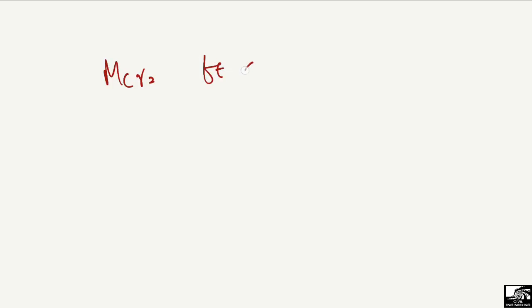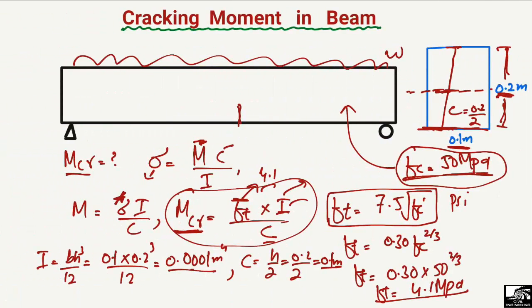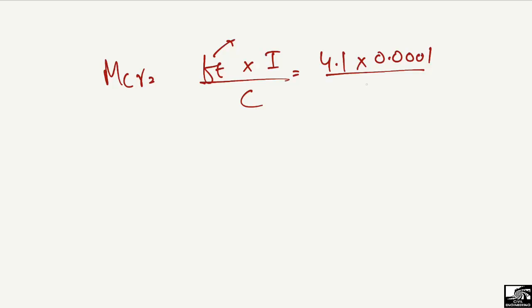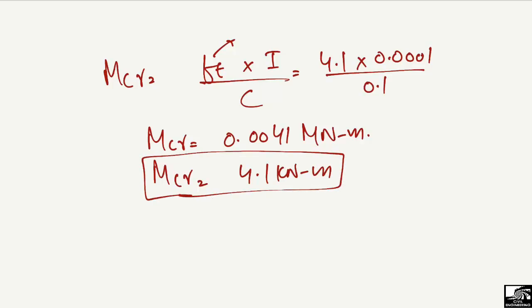Now putting all the values into the cracking moment formula: M_cr = f_t × I / C = 4.1 × 0.001 / 0.1, which gives M_cr = 0.0041 MN·m, or converting to kilonewton-meters: M_cr = 4.1 kN·m. So this is the cracking moment — at this point the first crack in the beam will occur in the tension side of the beam.